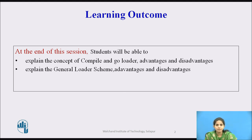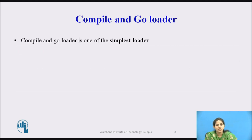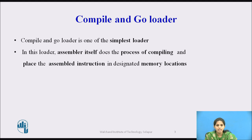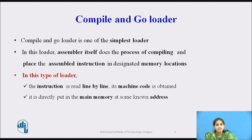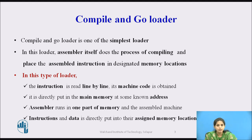Now first we see the compile and go loader. The compile and go loader is one of the simplest loaders. In this loader, the assembler itself does the process of compiling and then placing the assembled instructions in the designated memory locations. In this type of loader, the instruction is read line by line, its machine code is obtained, and it is directly put in the main memory at some known addresses. That means the assembler runs in one part of the memory.